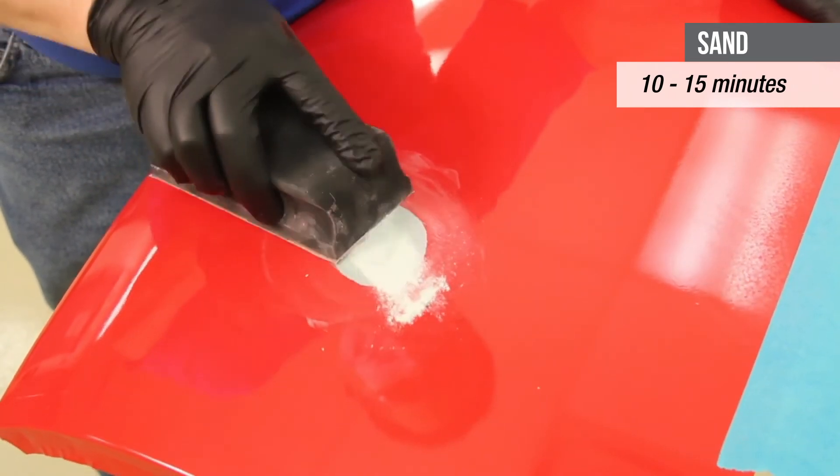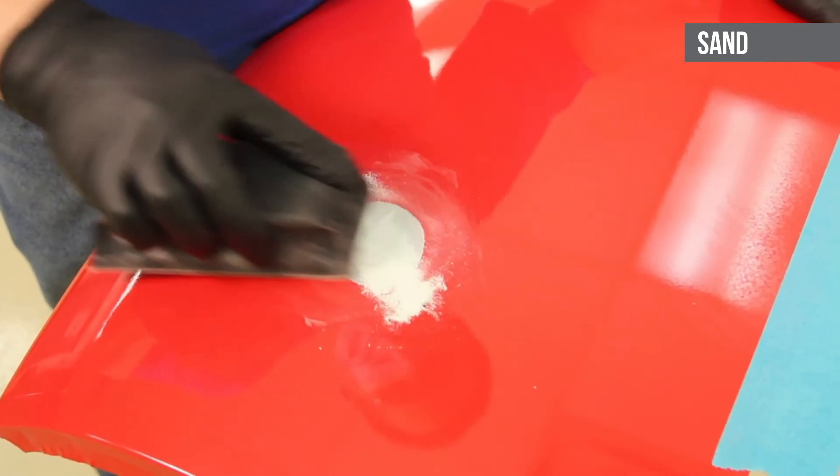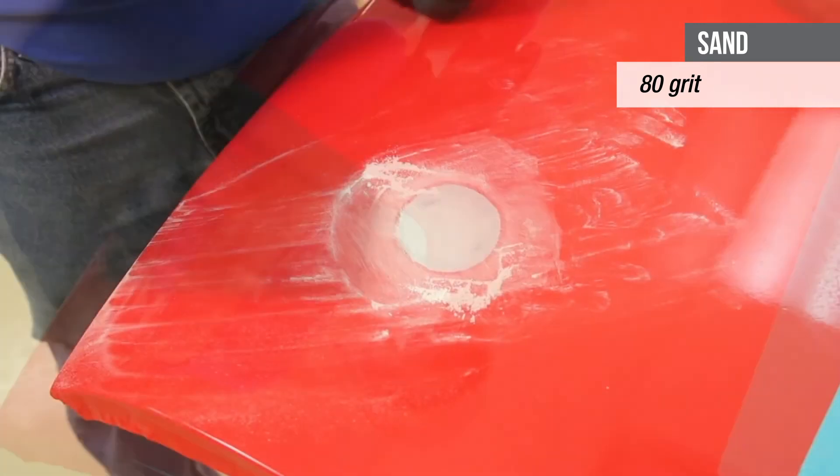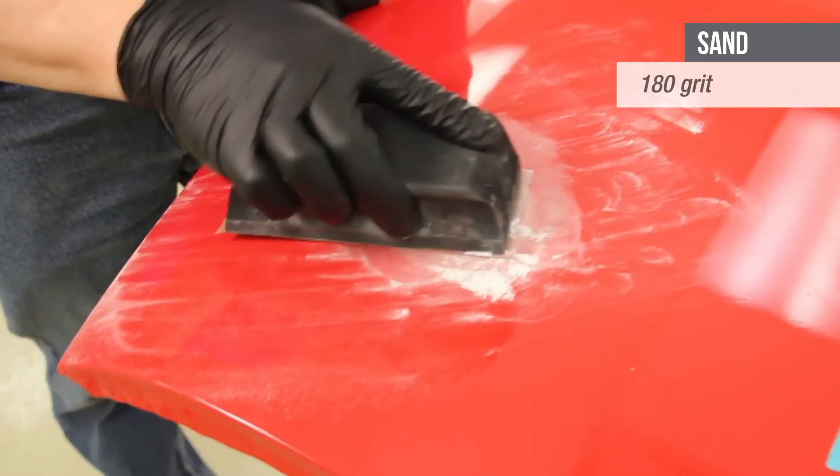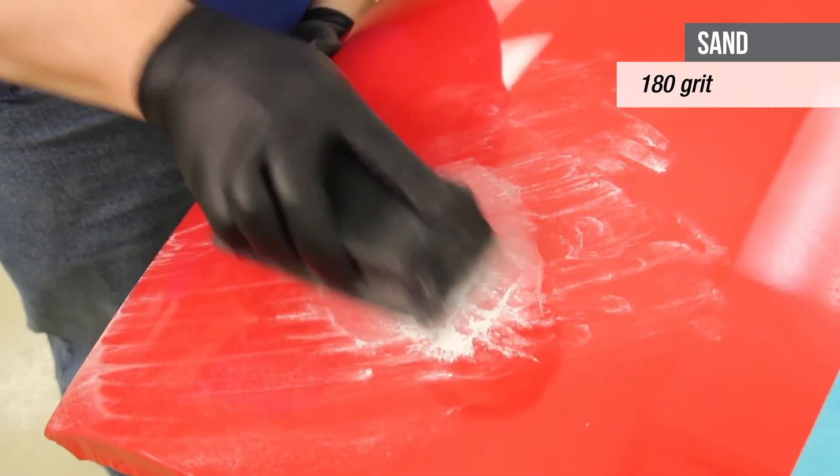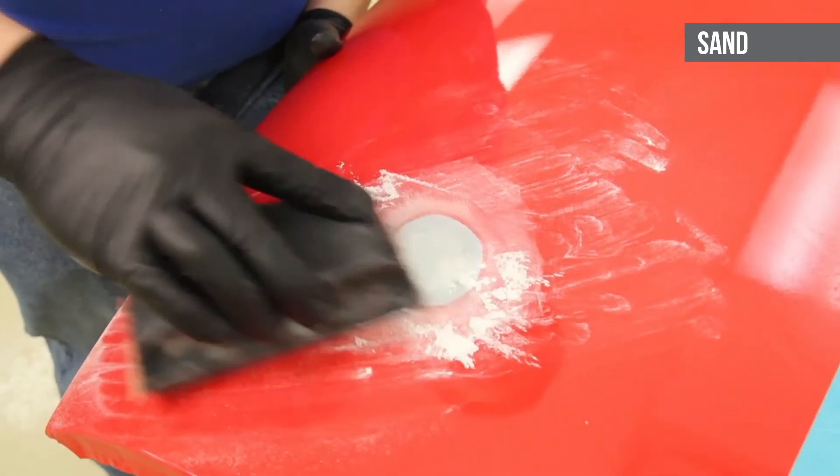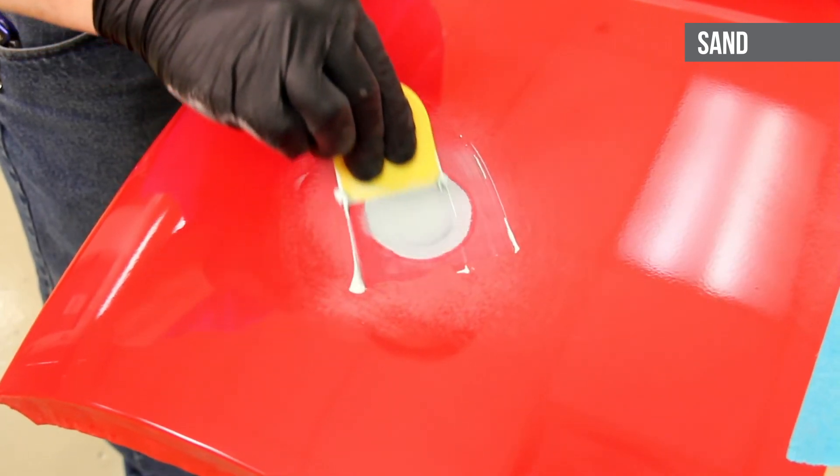Rough sand the filler with 80 grit sandpaper to the desired contour. Next, sand with 180 grit sandpaper to remove all the 80 grit sand scratches. If desired, we recommend finishing the repair with Evercoat Body Shop pro-grade glazing putty to fill in any pinholes that may have appeared before priming.